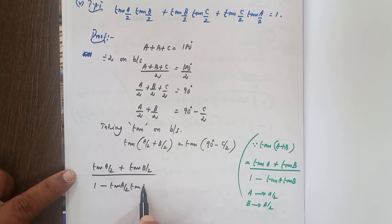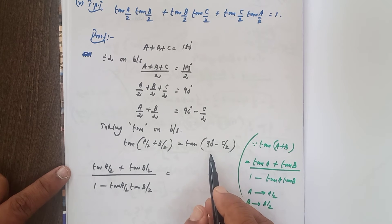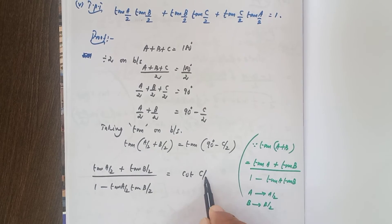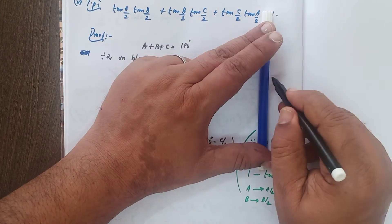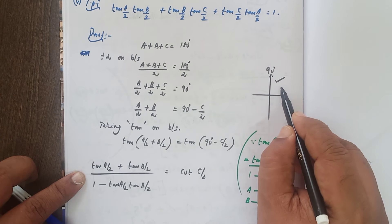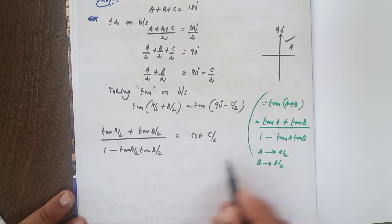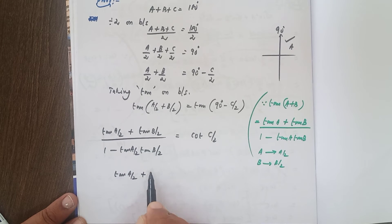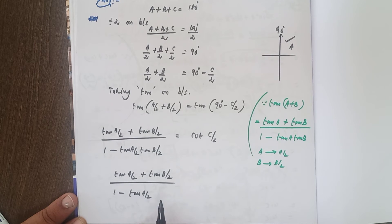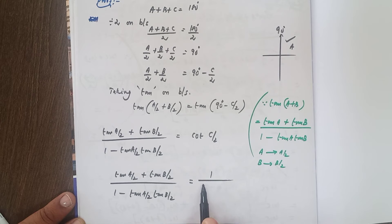The angle concept: for 90 degrees, tan becomes cot. The angle is C/2, and 90 minus C/2 lies in the first quadrant where all values are positive. So (tan(A/2) + tan(B/2)) / (1 − tan(A/2)·tan(B/2)) equals cot(C/2). We know cot θ = 1/tan θ, so this equals 1/tan(C/2).